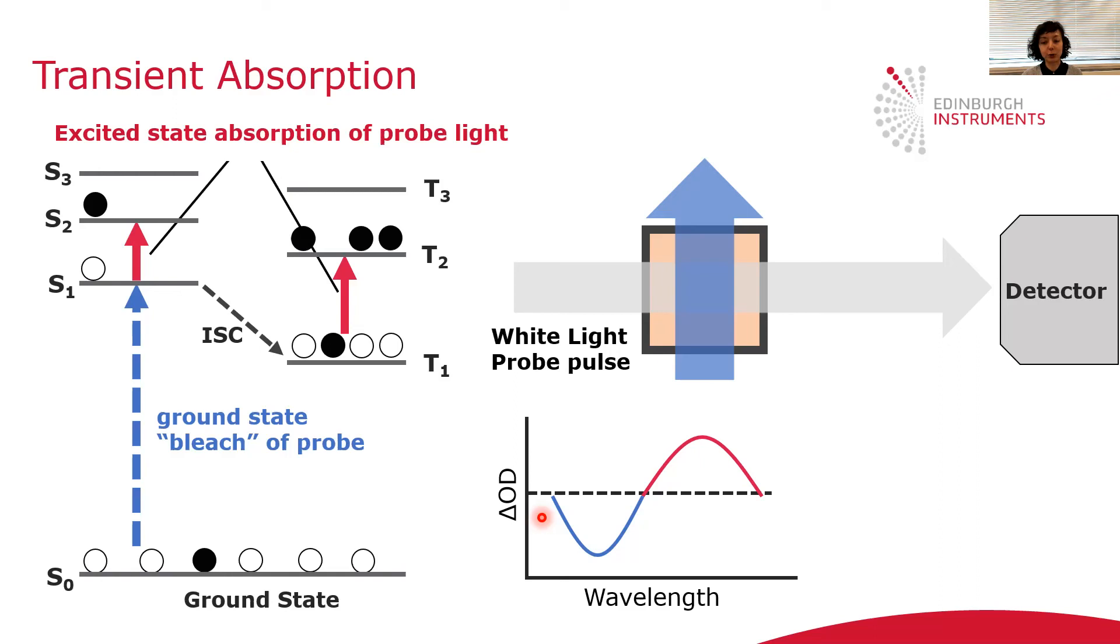This bleaching is as follows. The pump pulse has depleted the population of the ground state, so its absorbance has decreased, and this results in a negative change in OD, OD being optical density.